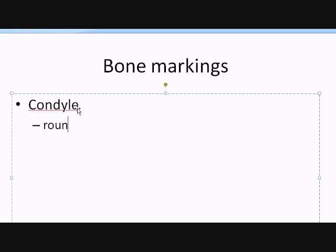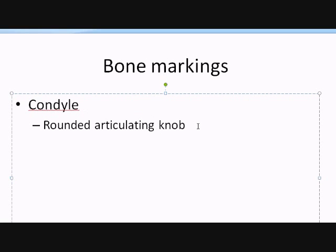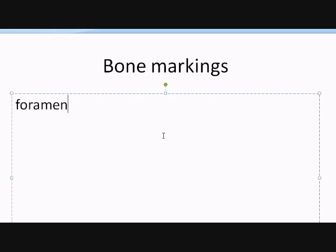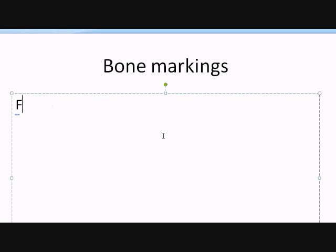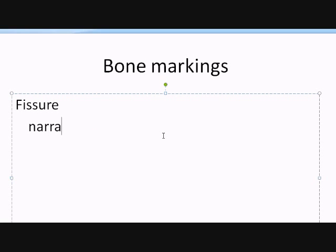Another bone marking is the condyle — a rounded, articulating knob. You can find this at the humerus. We also have the foramen — a rounded opening. Probably the most well-known is the foramen magnum, which you can find at the opening at the bottom of the skull. This is where the spinal cord passes through.